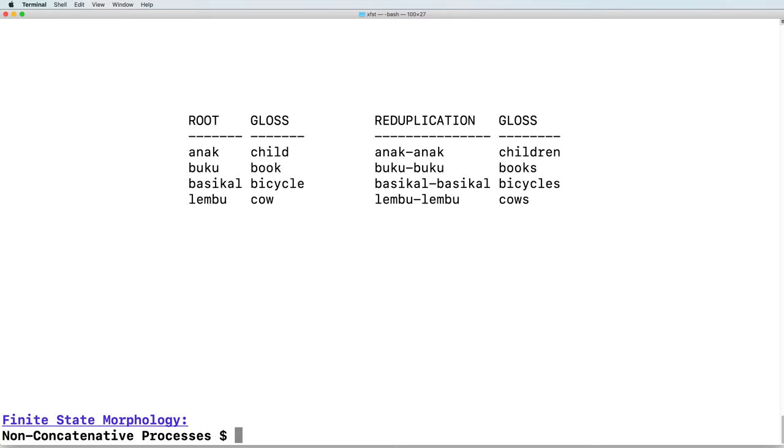However, there are languages where there are non-concatenative processes at play. One of the classic examples is reduplication in Indonesian and Malaysian. Here are some examples taken from the textbook.